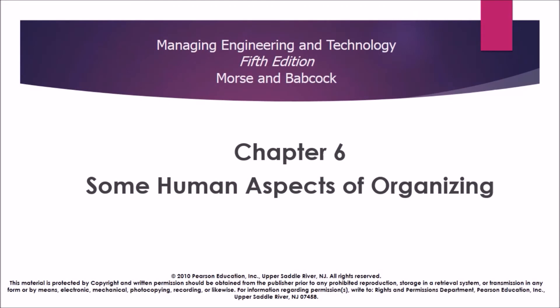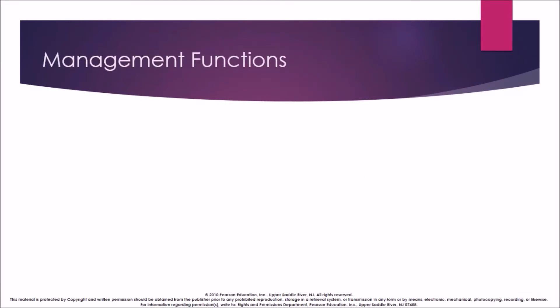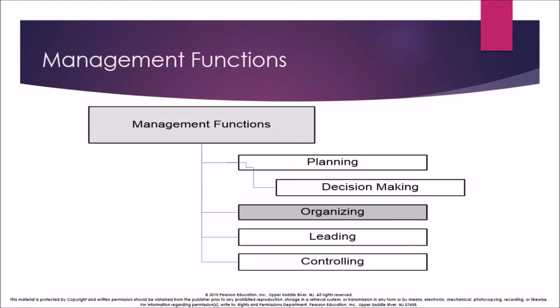Chapter 6: Some Human Aspects of Organizing. Management functions are divided into planning, decision-making, organizing, leading, and controlling. In this chapter we will be discussing the human aspects of organization.